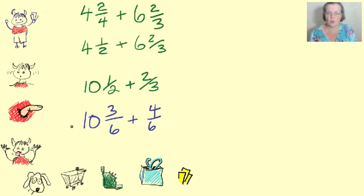Don't forget the integers, the whole numbers. Oh, so that gives us 10. And 3/6 plus 4/6. So, that's 7/6. 10 and 7/6.